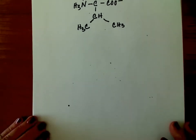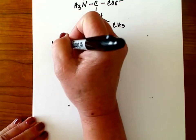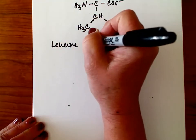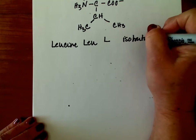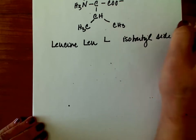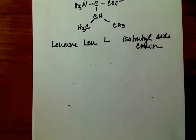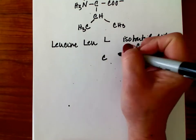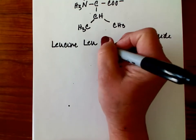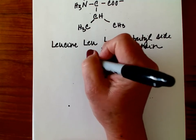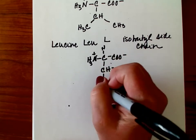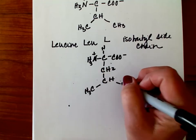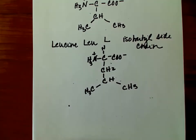Next is leucine — LEU, L. This has an isobutyl side chain, or R group. Remembering that butyl has four carbons in the group. And this is leucine.